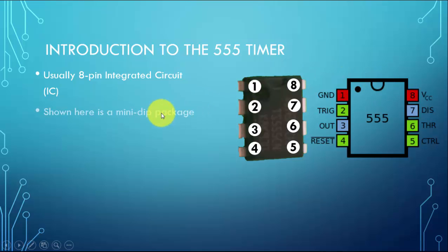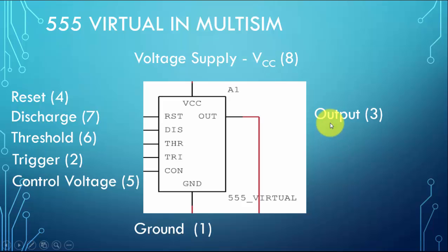This is known as a mini DIP package, and the number of transistors depends on the manufacturer. Basically, there are about 20 transistors, 15 resistors, and 2 diodes. Here's a block diagram of a 555 found in Multisim.